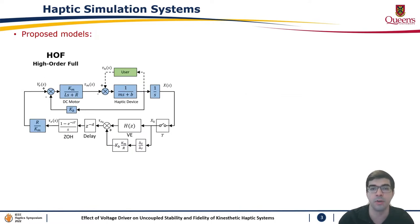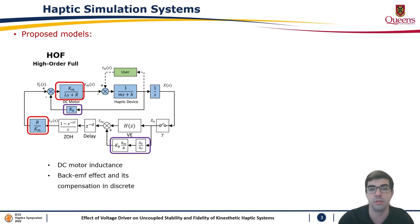Therefore, we propose high-order models where a DC motor powered by a voltage driver is used. The first model is called HOF. Here we consider the inductance and the back-EMF effect with compensation in discrete.